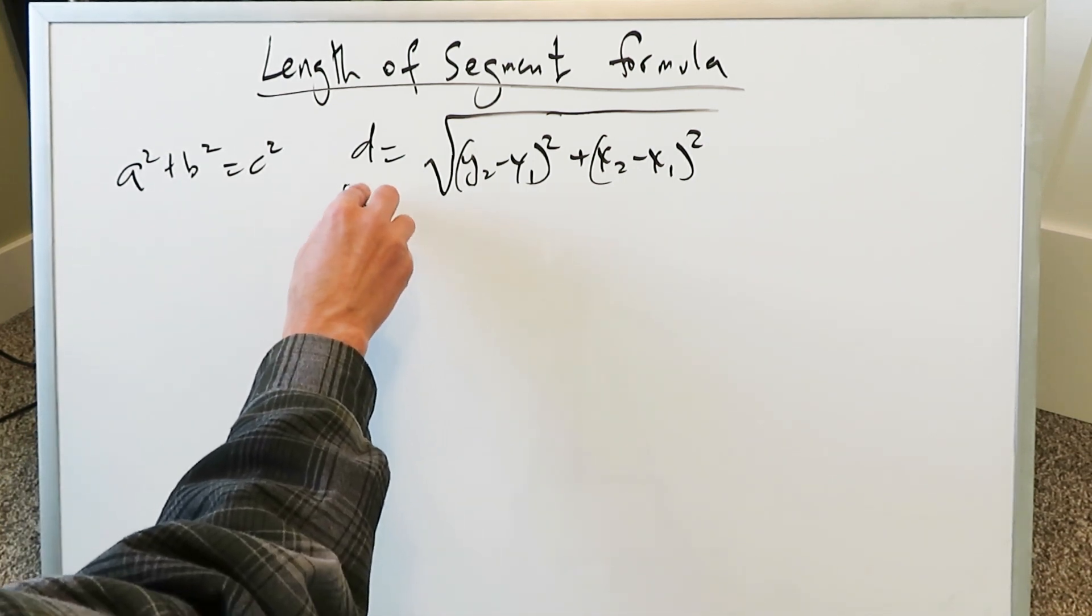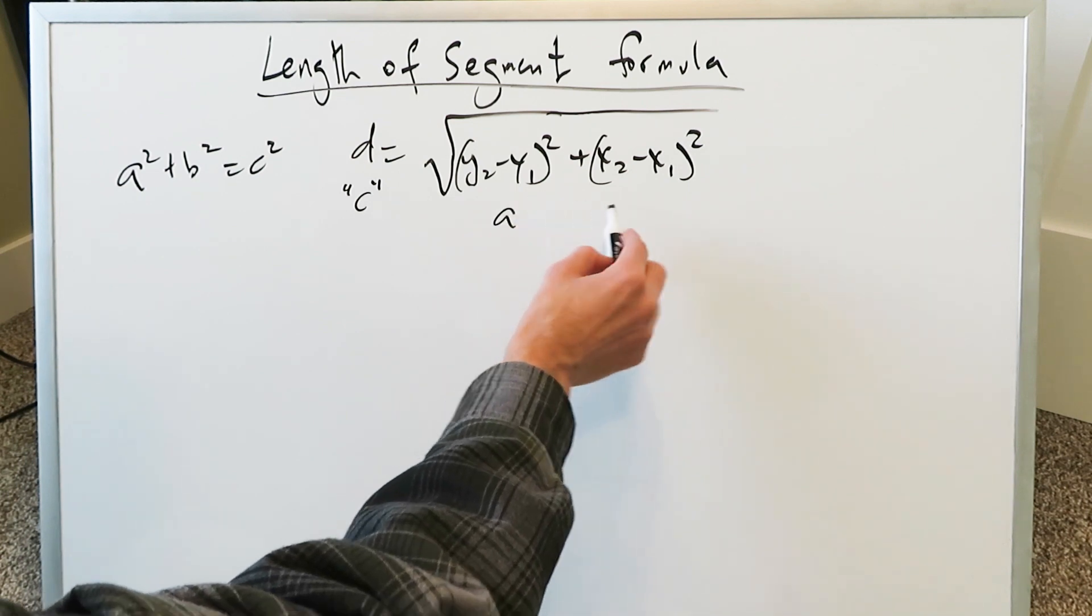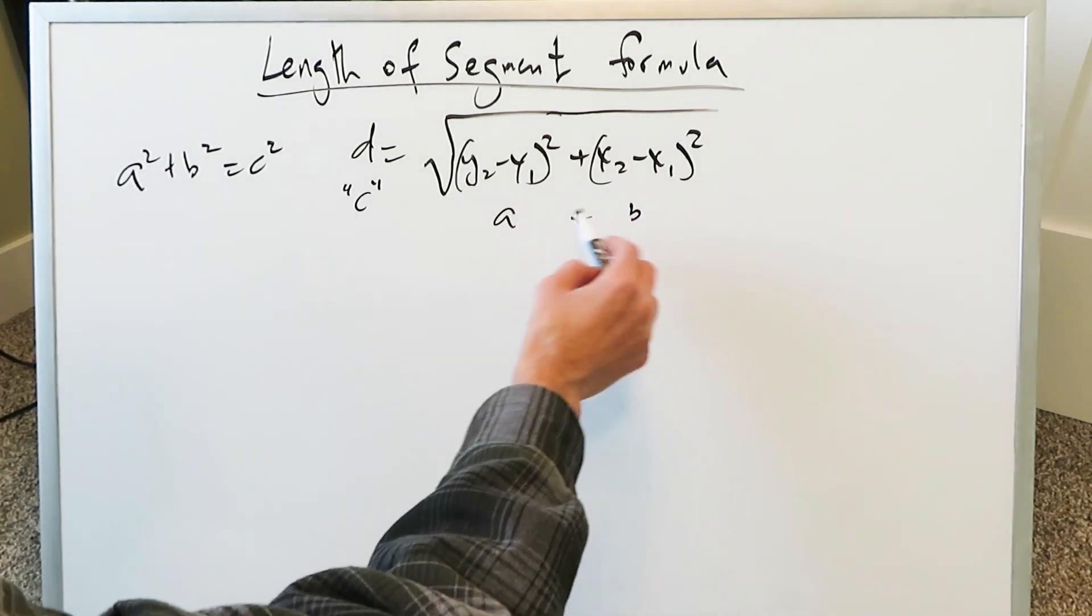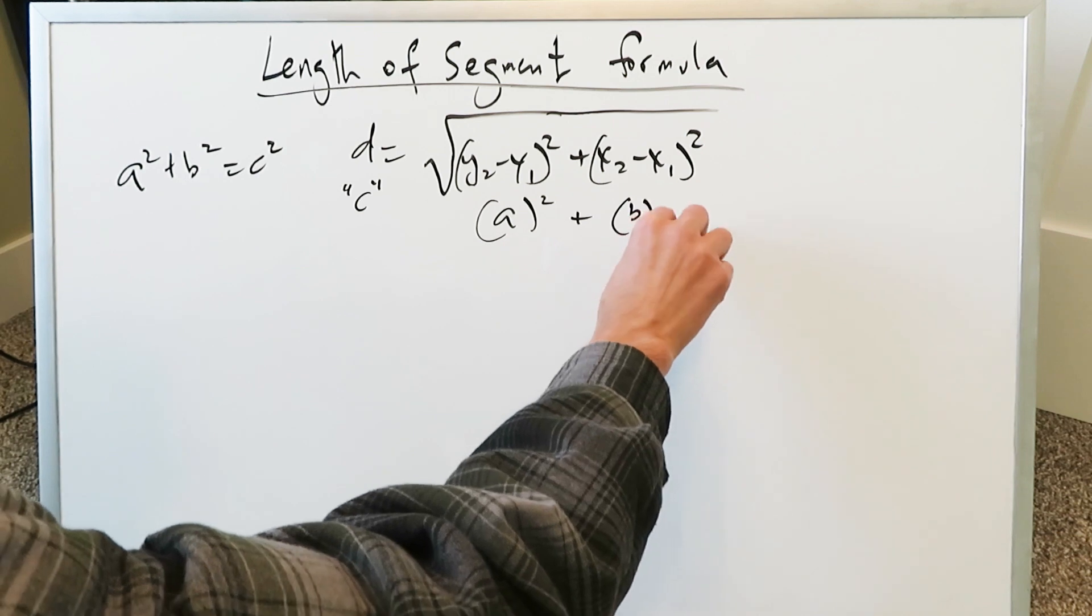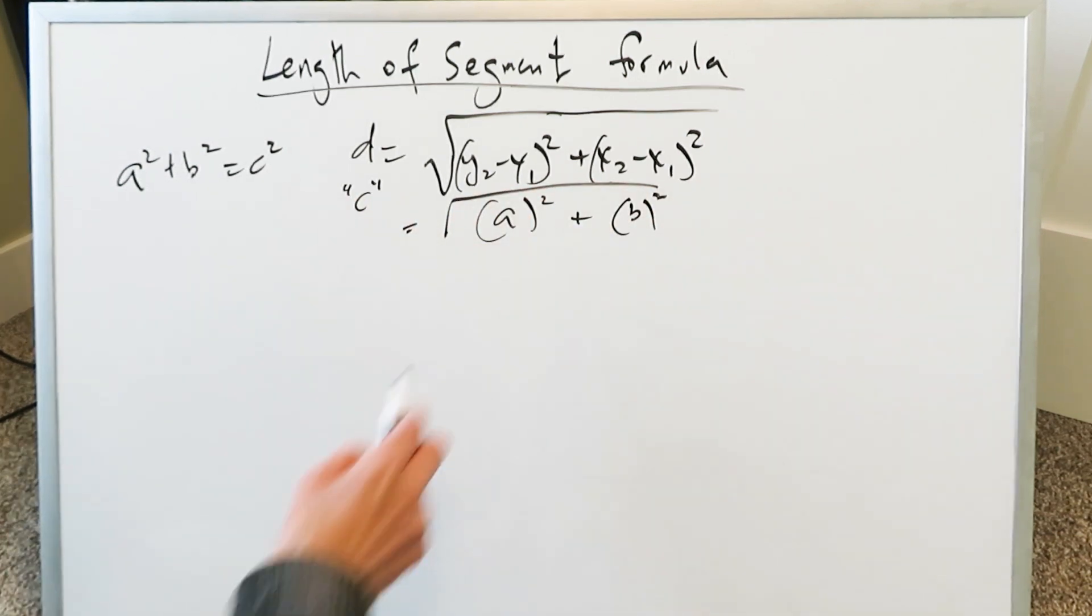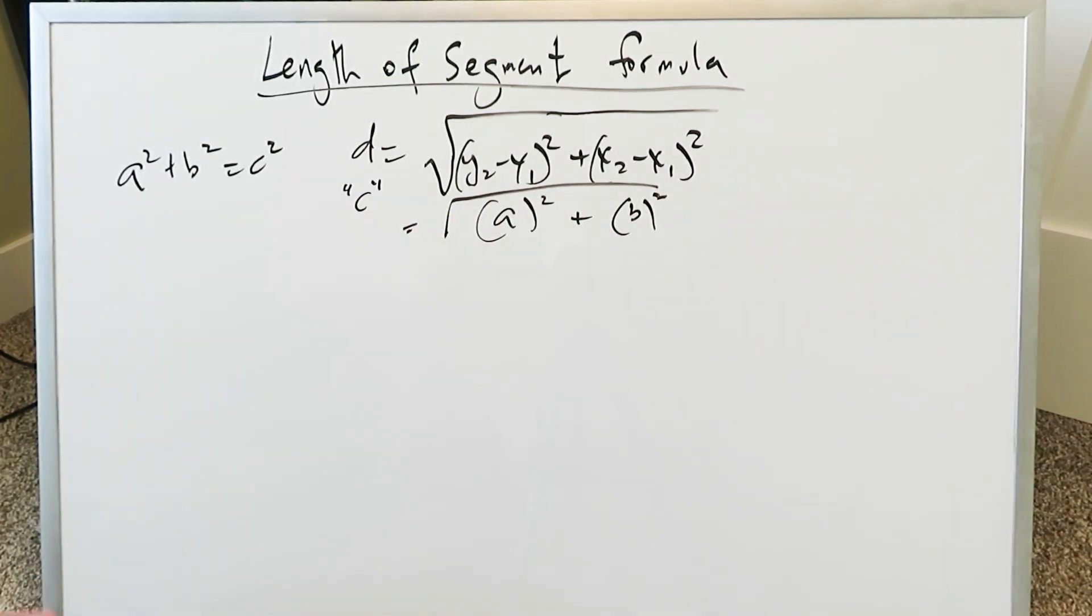You're looking here essentially at a c, and then you're looking here at an a or a b, and then a or a b. It doesn't matter the order. And you can see everything come into this form in terms of a Pythagorean formula and that's how you proceed.